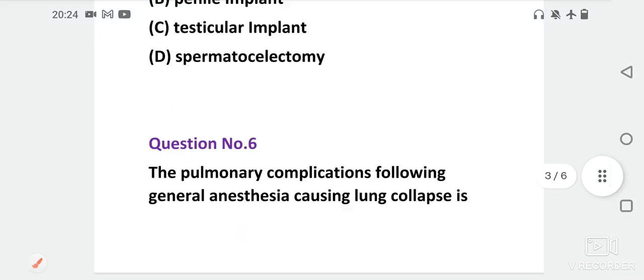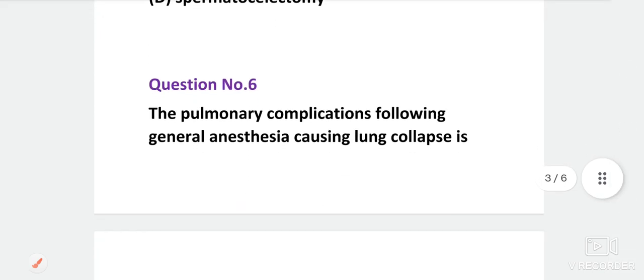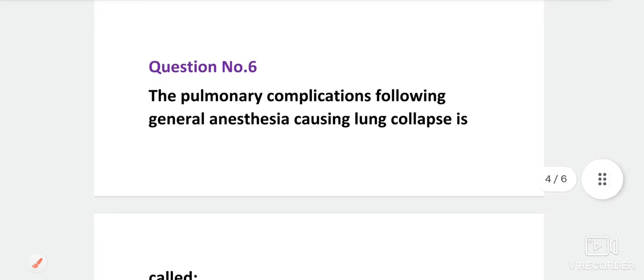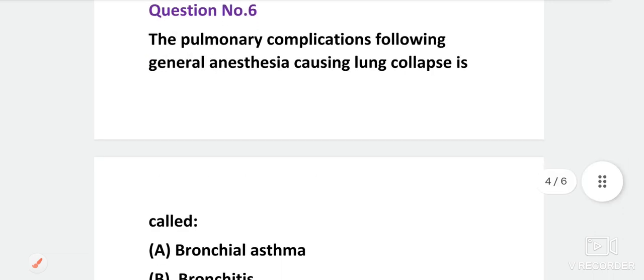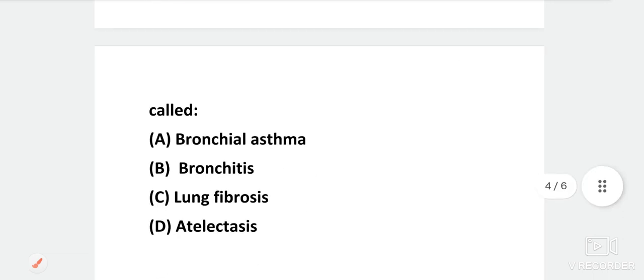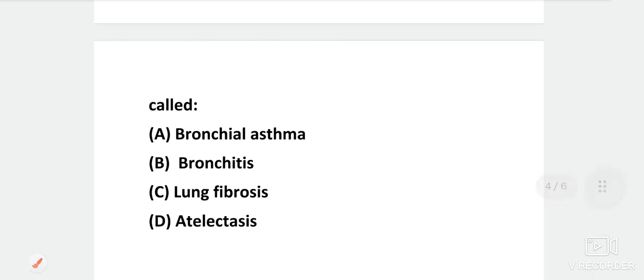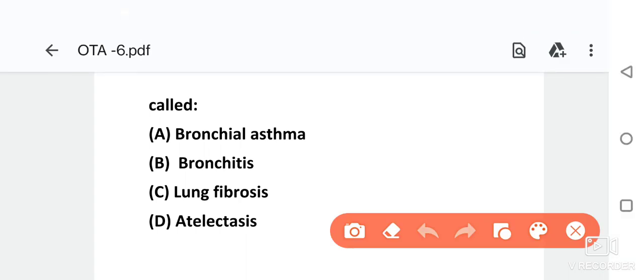Next question. The pulmonary complication following general anesthesia causing lung collapse is known as? Options are bronchial asthma, bronchitis, lung fibrosis or atelectasis. The correct option is in the comment section. The correct answer is atelectasis.